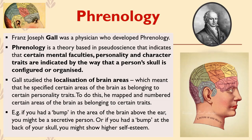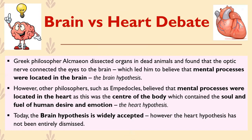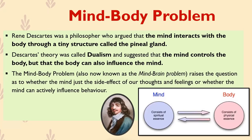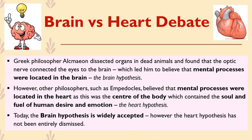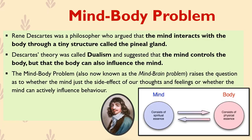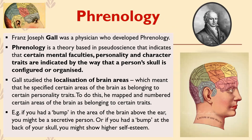Those are the three main early approaches to understanding the brain covered today. Just to recap: the brain versus heart debate was first, the mind-body problem was second, and phrenology was third. Do you guys have any questions about any of the three?